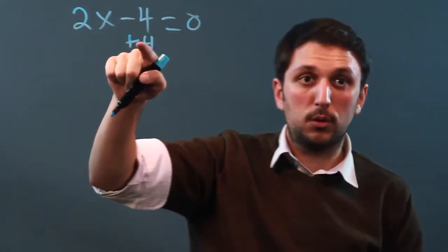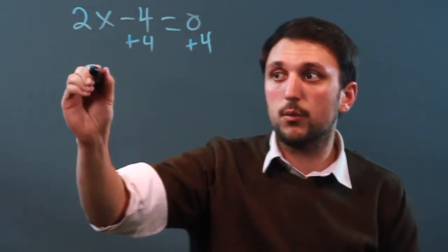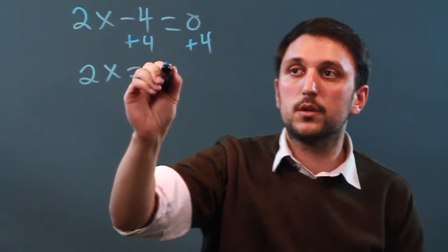And negative 4 plus positive 4 cancels it out, and over here, we just add 4. So we get 2x equals 4.